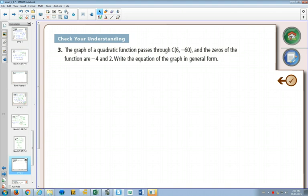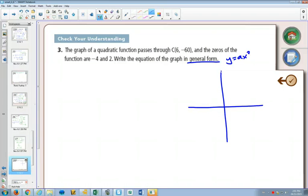We want to write the graph in general form. General form is y equals ax squared plus bx plus c. So far we've learned three forms of the quadratic equation, quadratic function.